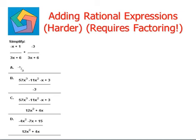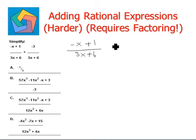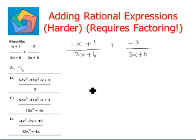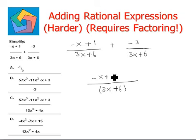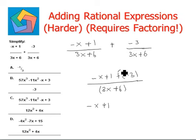Let's try the next question. Simplify: negative x plus 1, divided by 3x plus 6, plus negative 3, divided by 3x plus 6. Here we see that both the denominators are the same, so the LCM will be 3x plus 6 only, and the numerators can be added directly. This reduces to negative x plus 1, and a positive times a negative gives negative 3, divided by 3x plus 6.